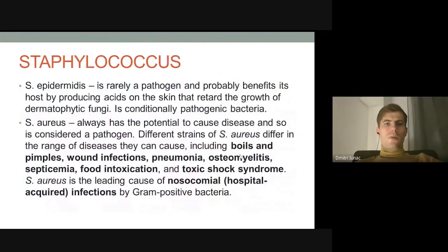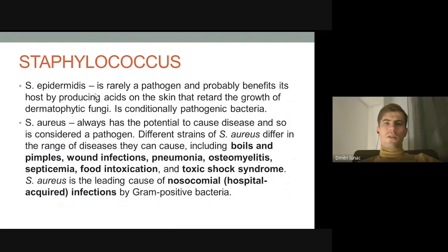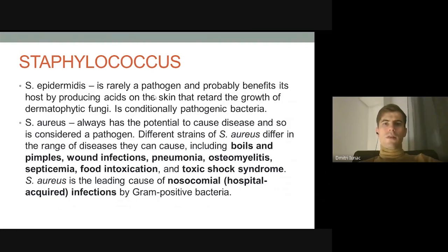Two main medically important species of staphylococcus are Staphylococcus epidermidis and Staphylococcus aureus. Staphylococcus epidermidis is usually considered part of normal flora, but it is a conditionally pathogenic bacterium — it can prevent growth of fungi on the skin, but it also presents a risk to people with surgical wounds or implants, since it is normally present on the surface of human skin.